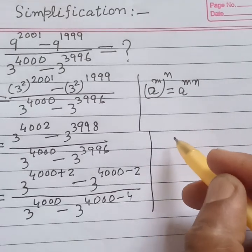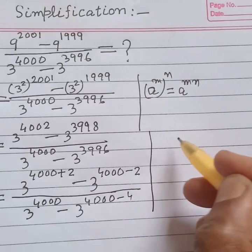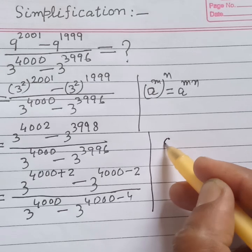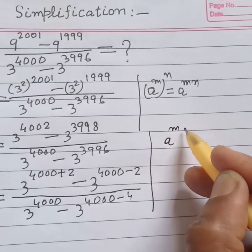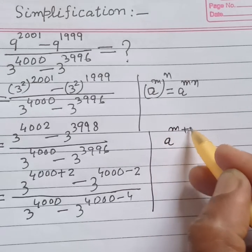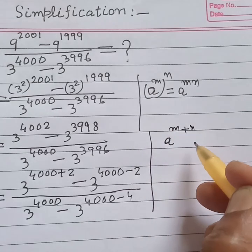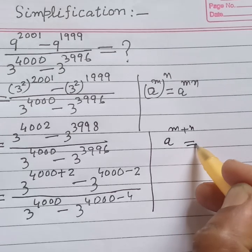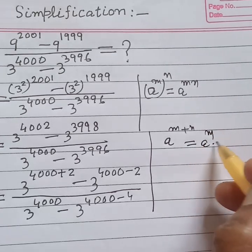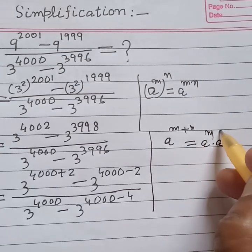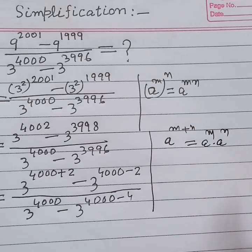Next, we apply the indices rule: a to the power m plus n is equal to a to the power m multiplied by a to the power n.